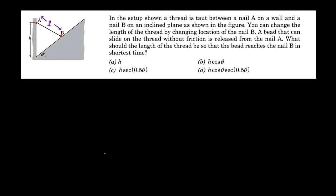A bead that can slide on the thread without friction is released from nail A, and it will slide all the way to B. The question is: what should be the length of the thread so that the bead reaches nail B in the shortest time?